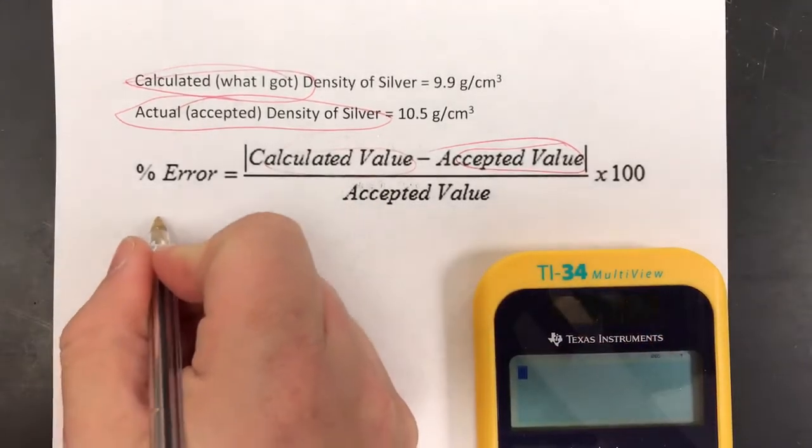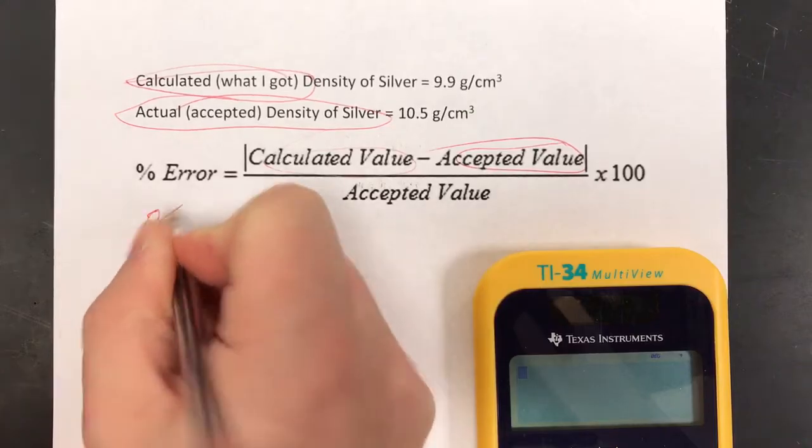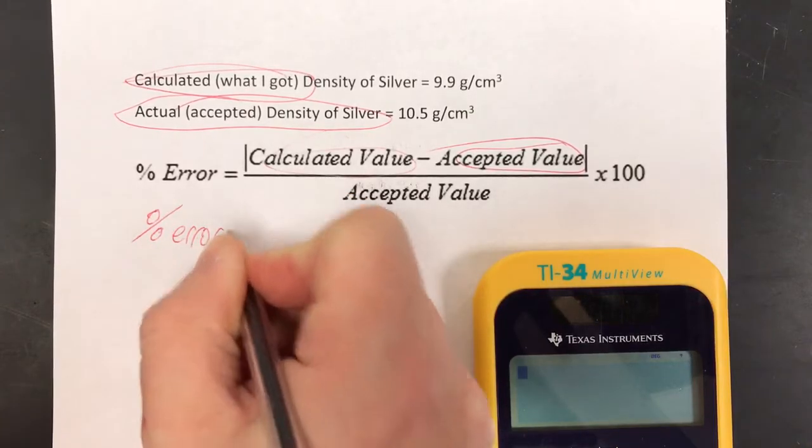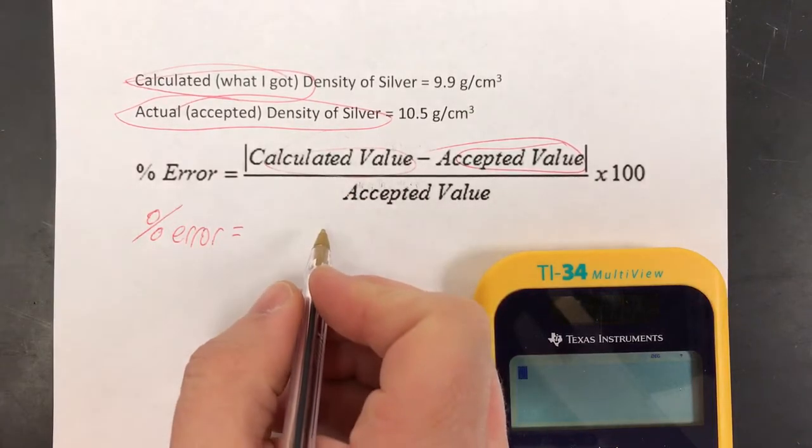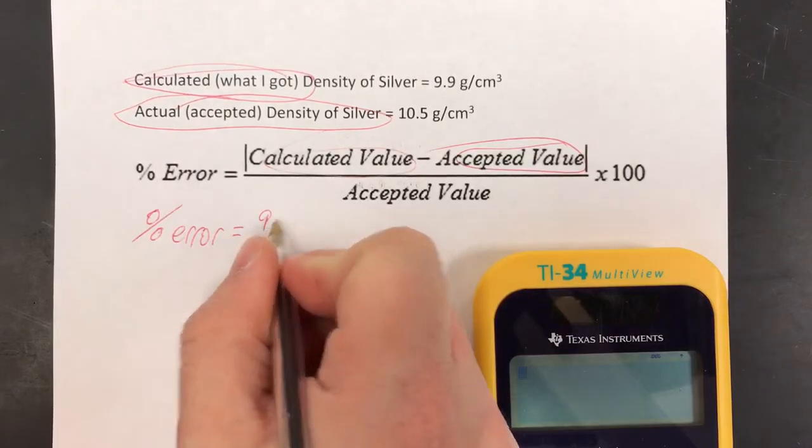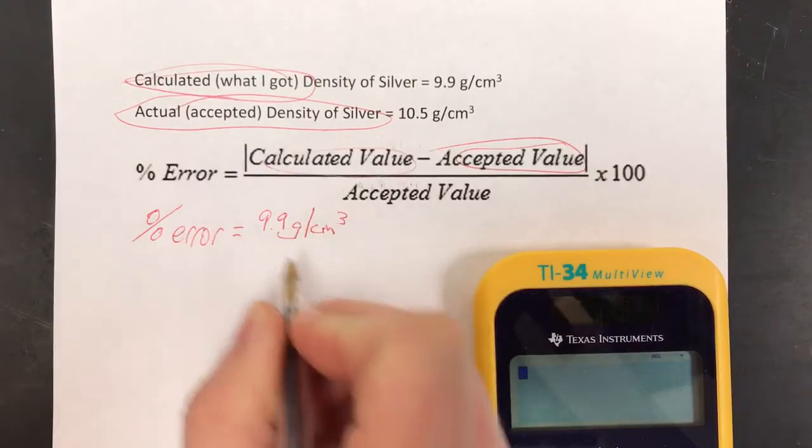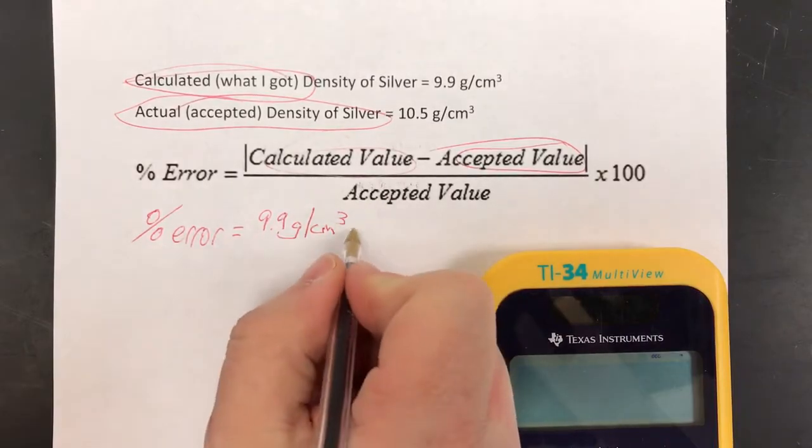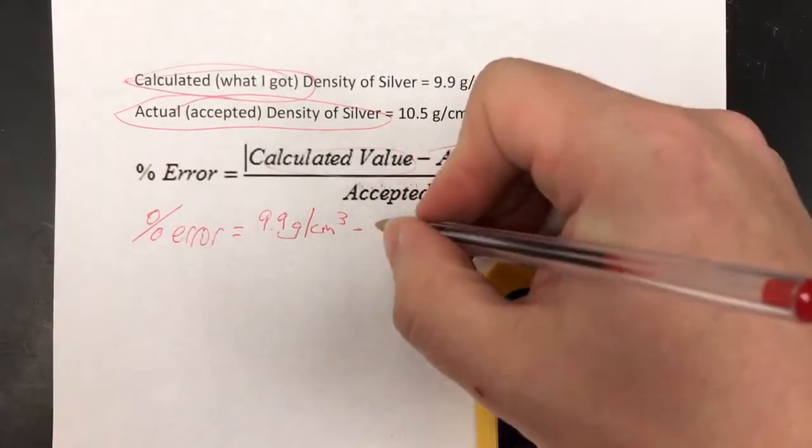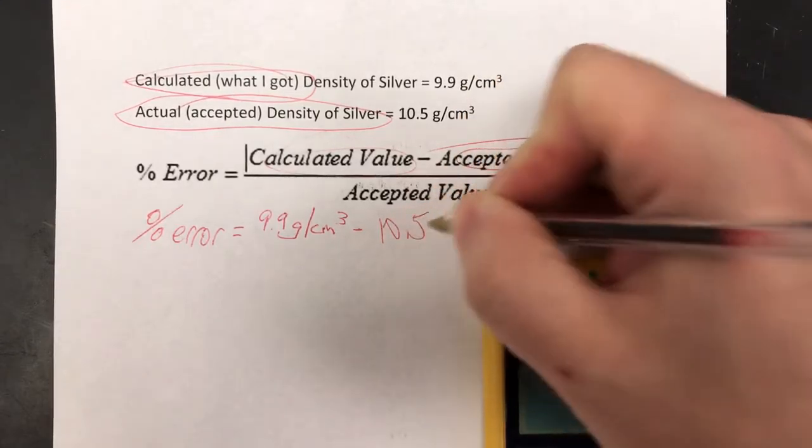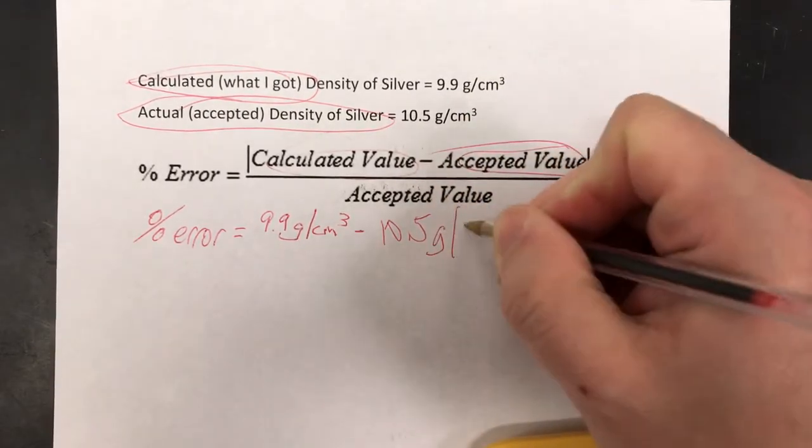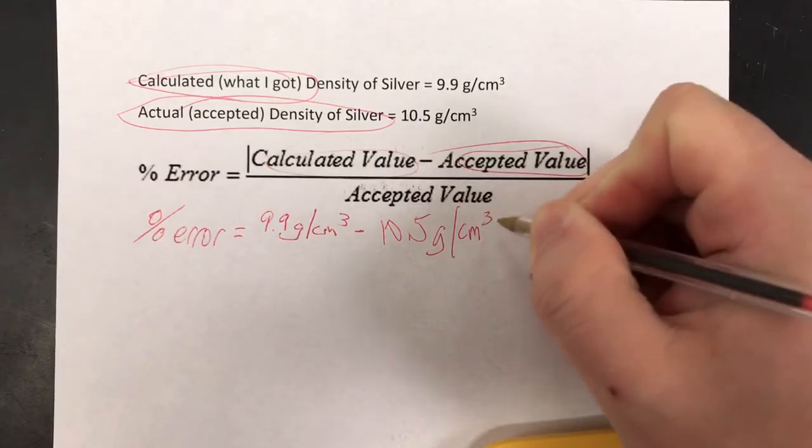So it works like this. I go percent error equals my calculated value 9.9 grams per centimeter cubed minus my accepted value 10.5 grams per centimeter cubed.